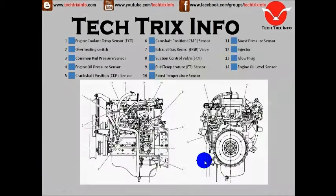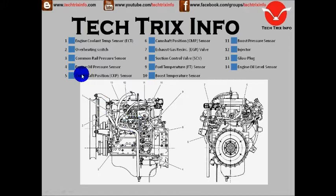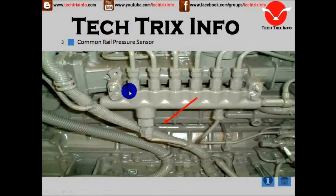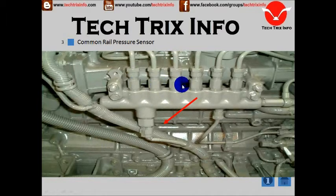Number three is the common rail pressure sensor. Let's go and identify it here. This is the common rail injection system — you can see the injectors and the high pressure pipes going from the common rail. Beneath that, we have the common rail pressure sensor located.